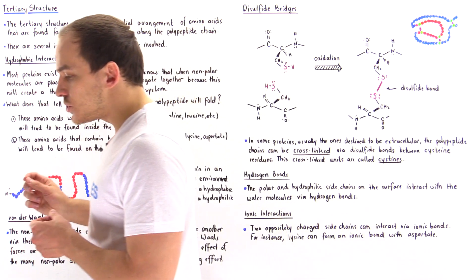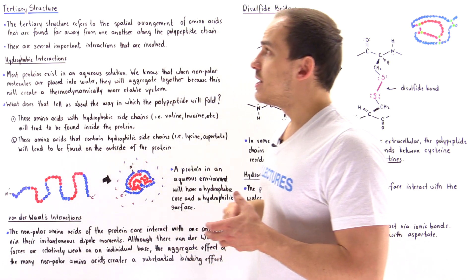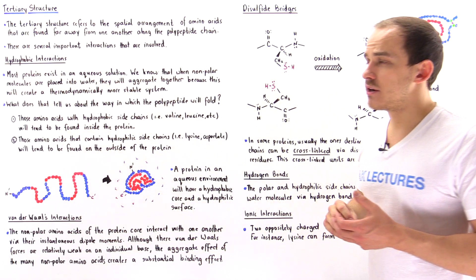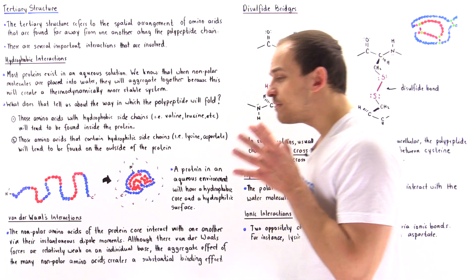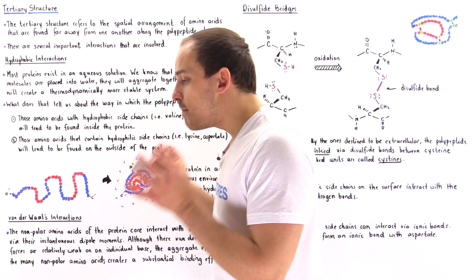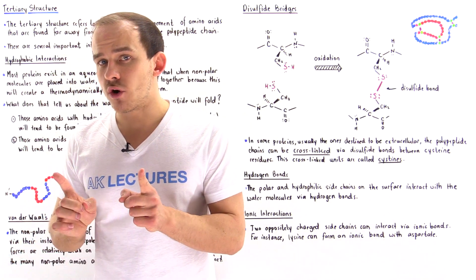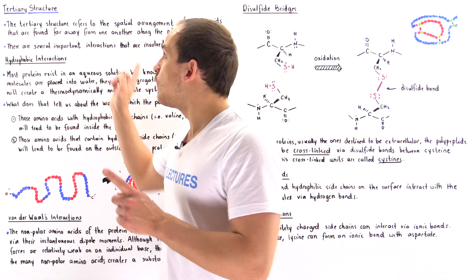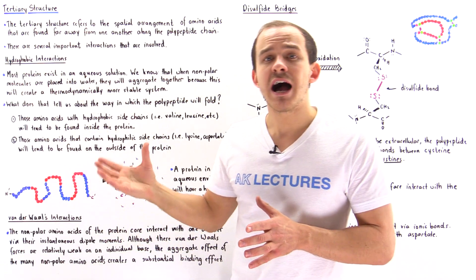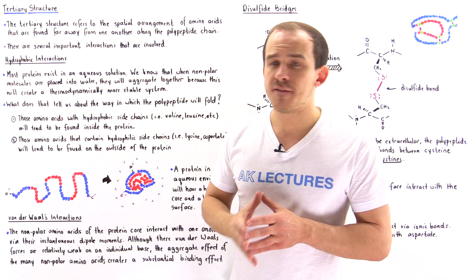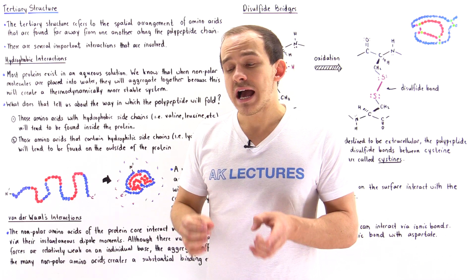What are the interactions that play a role in creating and forming that tertiary structure of the polypeptide? By far, the most important factor — the driving force that forms the tertiary structure — is the hydrophobic effect and hydrophobic interactions.